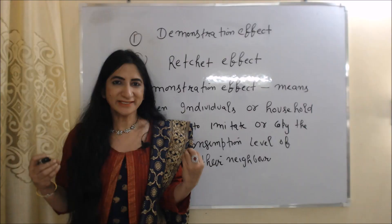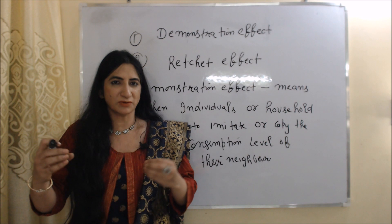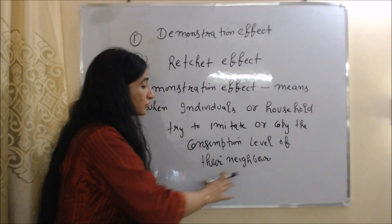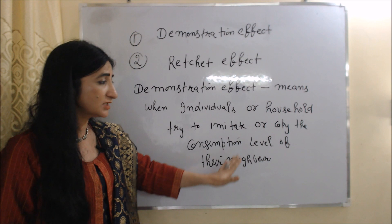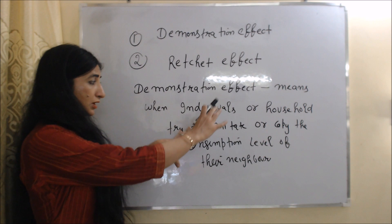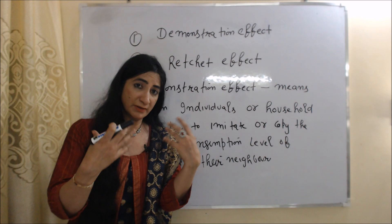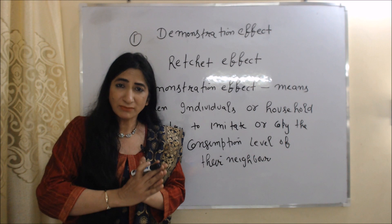This hypothesis also talks about two types of effects: demonstration effect and ratchet effect. Demonstration effect means when individuals or households try to imitate or copy the consumption level of their neighbors. For example, if my neighbor buys a new TV and new AC, I also buy a new TV and AC by seeing him. We have already understood demonstration effect in the previous diagram.